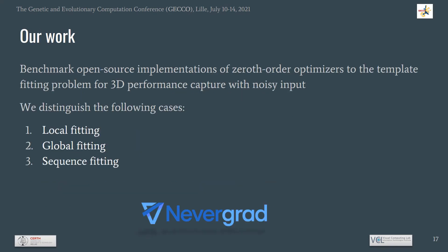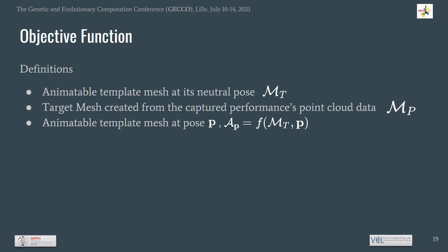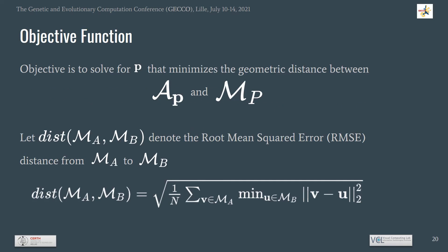The purpose of this work is to benchmark open-source implementations of zeroth order optimizers available in the NeverGrad platform applied to the problem of template fitting for 3D performance capture. We distinguish three cases: local, global, and sequence fitting, benchmarking 10 standard algorithms in total. We denote the animatable template mesh at neutral pose as NT, the target mesh created from a captured frame's point cloud as NP, and the animatable template at pose P as AP. The objective is to minimize the distance between the animatable template and the target mesh by solving for the template mesh pose P.